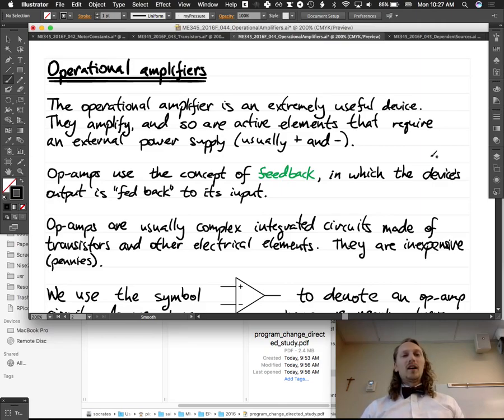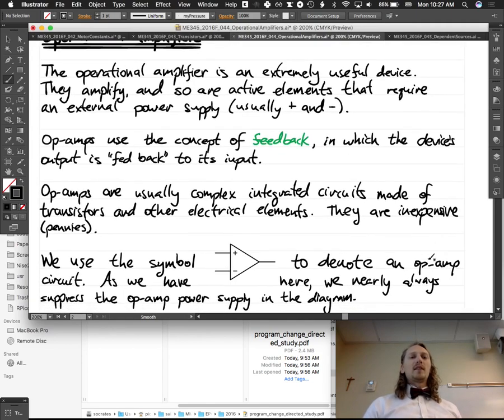So op-amps are usually complex integrated circuits made of transistors and other electronic elements. They're inexpensive, like they're pennies. So they're very inexpensive. And if you order them in bulk, you order a hundred thousand of them, then you get them for very small pennies. So they're very, very inexpensive.